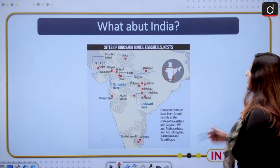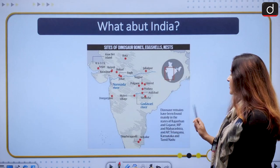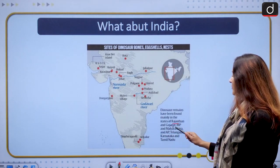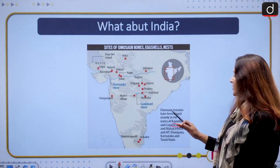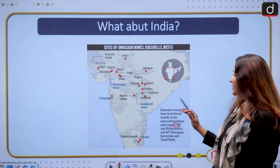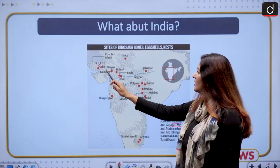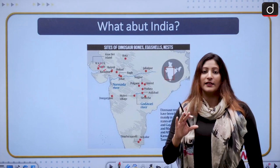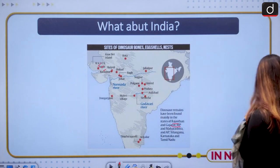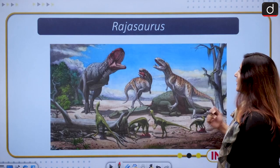If we talk about other places in India, dinosaur remains have been found in Rajasthan, Gujarat, Madhya Pradesh, Maharashtra, Andhra Pradesh, Telangana, Karnataka, and Tamil Nadu. These are the regions where remains of dinosaurs have been discovered until now.